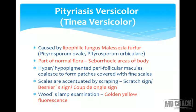The patient presents with hyper or hypopigmented perifollicular macules which coalesce to form patches covered with fine scales. That is why the name Pityriasis versicolor — pityriasis means bran-like fine scales, and versicolor means different shades of presentation, so it could be hyperpigmented or hypopigmented.